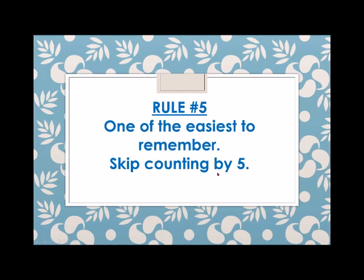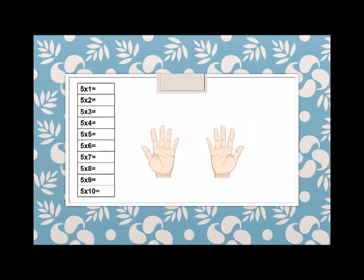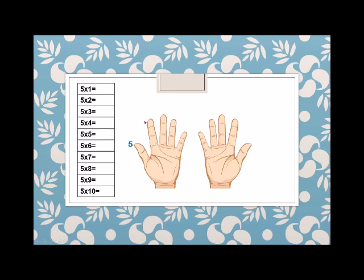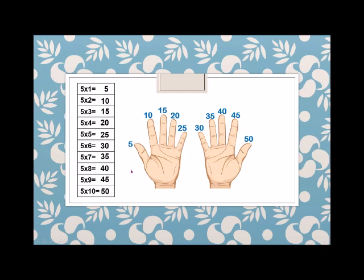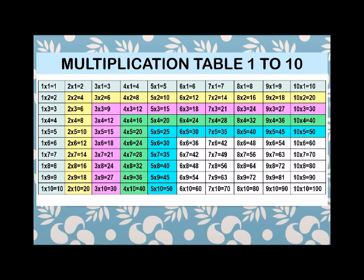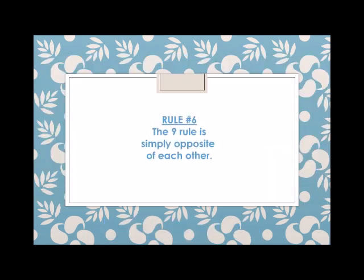Rule number 5 is one of the easiest to remember — skip counting by 5. Using our hands: 5, 10, 15, 20, 25, 30, 35, 40, 45, 50. From rule number 5, we just solved 75 math facts.